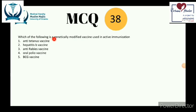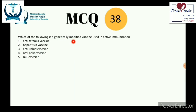For question 38, we need a vaccine that is both genetically modified and used in active immunization. This excludes answer 1 (anti-tetanus) and answer 3 (anti-rabies) — both used for passive immunization. Answers 4 and 5 are wrong because although they use attenuated microorganisms, they are not genetically modified. The correct answer is the hepatitis B vaccine — a genetically modified vaccine used in active immunization.